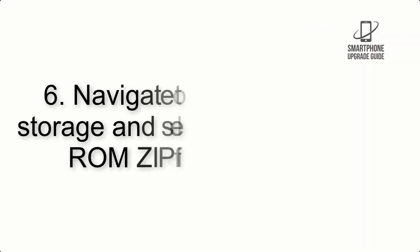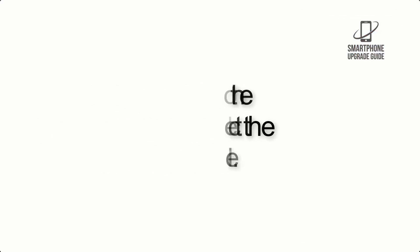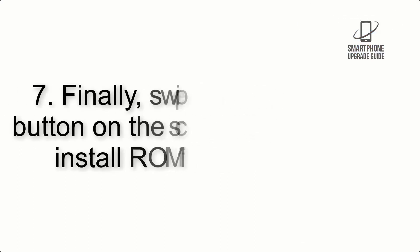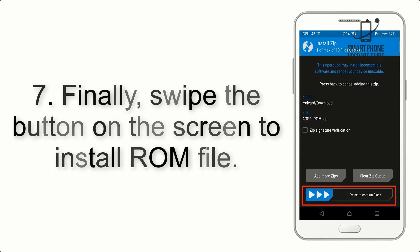Step 6: Navigate to the Storage and select the ROM zip file. Step 7: Finally, swipe the button on the screen to install the ROM file.